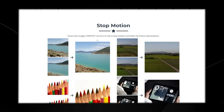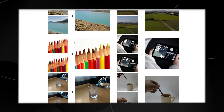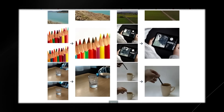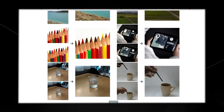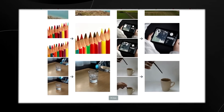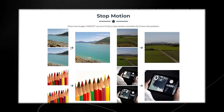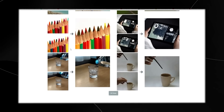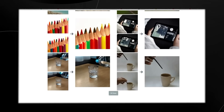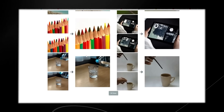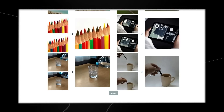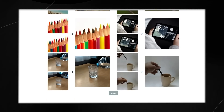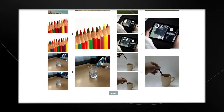Given two images, MAGVIT can turn them into a stop motion animation by frame interpolation. You have a brown pencil on one side, then the pencil moved to the right, and MAGVIT combines these two images and moves them in a specific direction to create a video animation. This would be very interesting for many different applications — imagine a video is corrupted or you just have a few images of something happening; you could synthesize that into a direct video. One example shows someone putting a pen into a cup, and another — my favorite — shows someone pouring water into a cup, where the animation of the water was actually pretty decent.